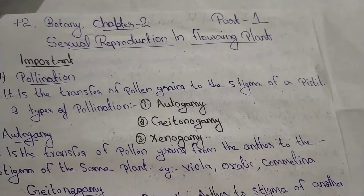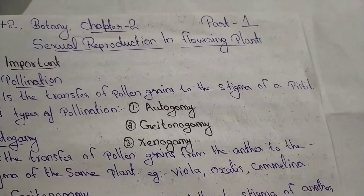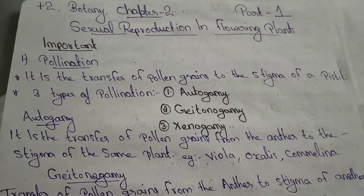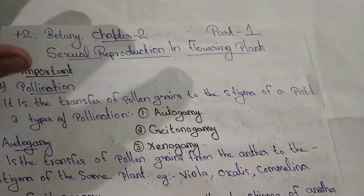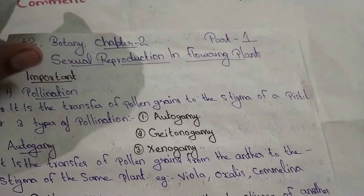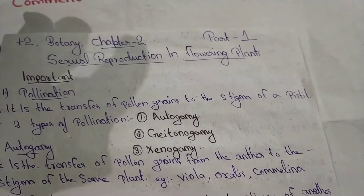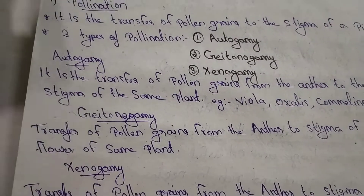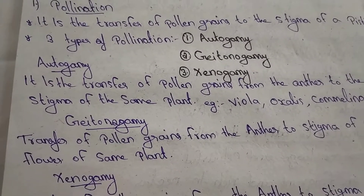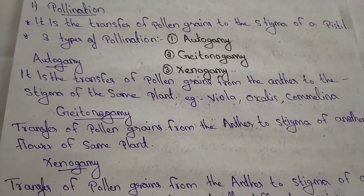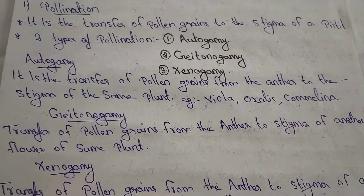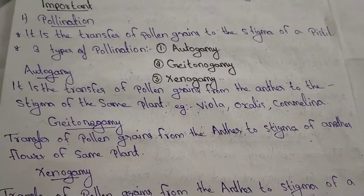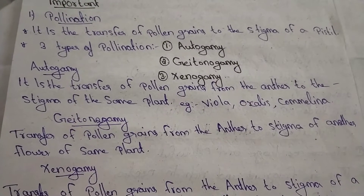This is an example of Viola, oxalis, and camellina. It is a transfer of pollen grains from anther to stigma of another flower of the same plant.